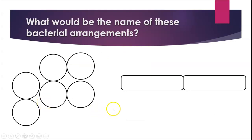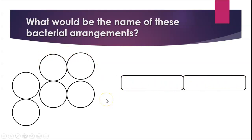To name these arrangements: a cluster of circular ones would be staphylococcus. A pair of rod-shaped ones would be diplobacillus. If you had a whole chain of bacilli, that would be streptobacillus. There's a worksheet on bacterial classification that you will do that utilizes those terms and helps you become more familiar with them.